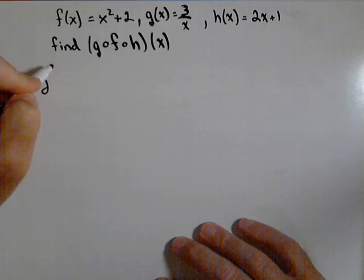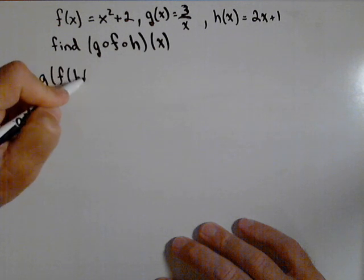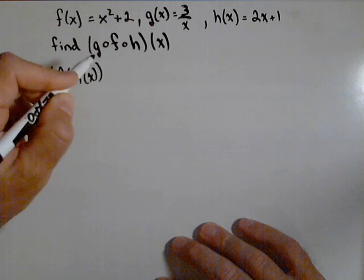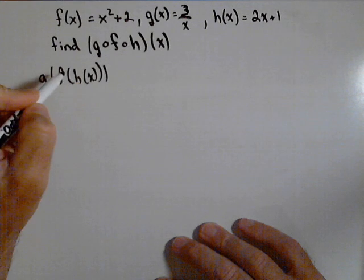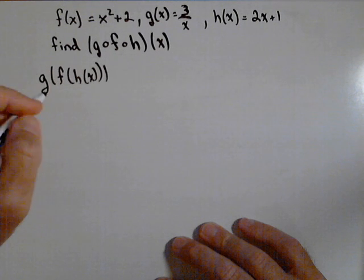So remember, in our regular function notation, that'd be g of f of h of x. Now, it's kind of hard to look at this way, so what I would say is start with your inside two functions. So let's just first concentrate on finding f of h of x.